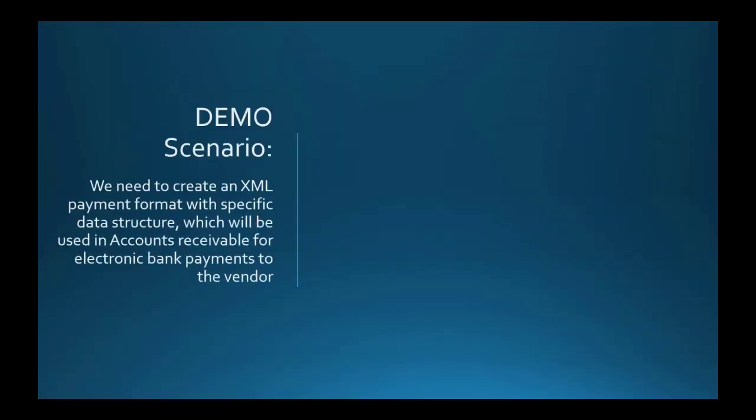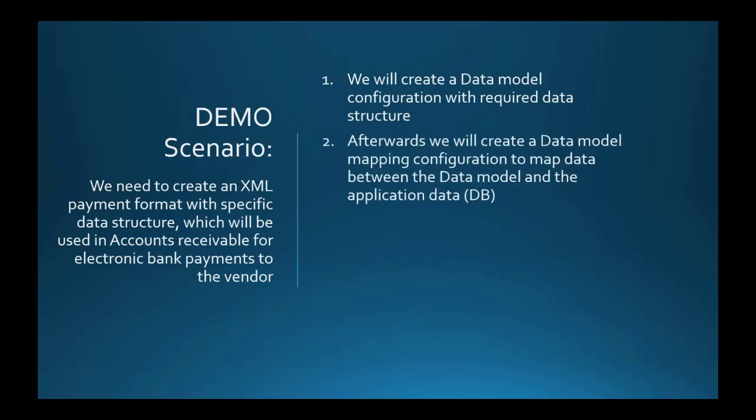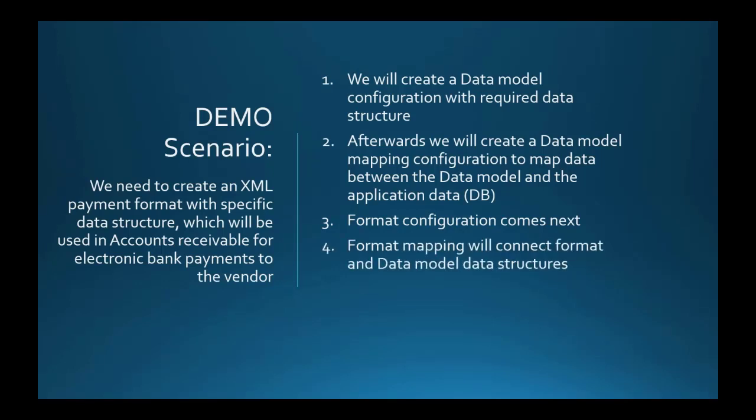Now we'll go back to our slides again. Now let's talk about our demo scenario today. Our goal for today is to show you what it takes to develop new configurations from scratch. We will be using a fictitious example of an XML payment format, which will be used in accounts receivable for electronic payments to the vendors. I will go through the entire cycle of generating the data model with required data structure. Then data model mapping to map our data model structure to the data sources in a database. Then format with its data structure of the final XML output file. Format mapping to map format and data model data structure to map them together. And finally, we will set up accounts payable to use our new payment file. And we'll test our work in accounts payable vendor payments.